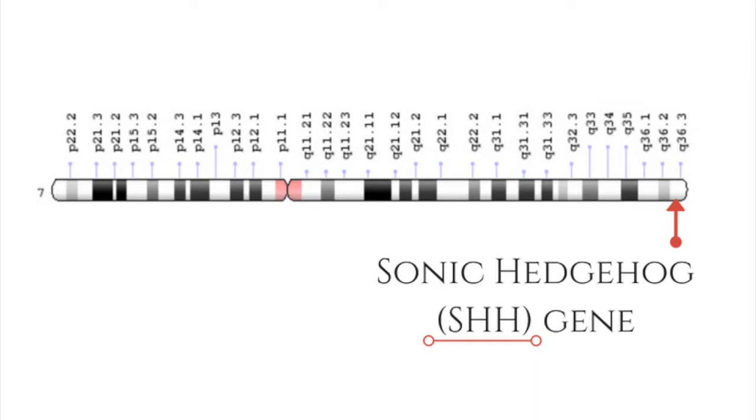Because of this blockage, there is nothing to signal the eye field to separate. This causes one eye cavity to form instead of two.